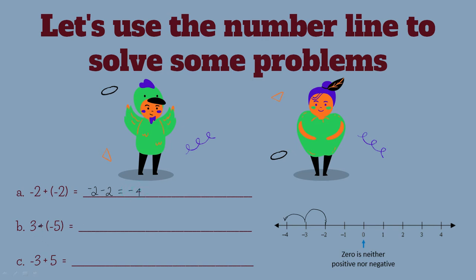Let's try this question: three plus negative five. Again, you have a positive next to a negative number, and it's going to multiply with that negative number to give you three minus five.